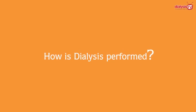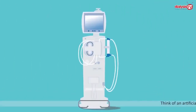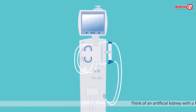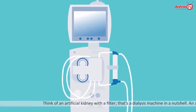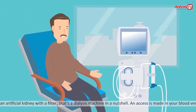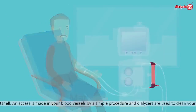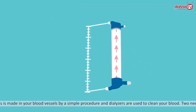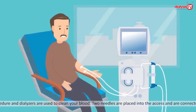How is dialysis performed? Think of an artificial kidney with a filter — that's a dialysis machine in a nutshell. An access is made in your blood vessels by a simple procedure, and dialyzers are used to clean your blood.